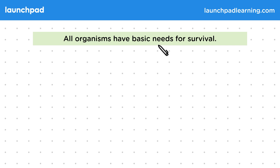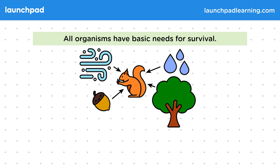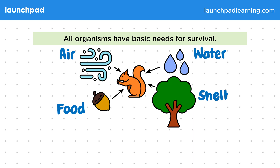All organisms have basic needs for survival. Here are the key factors that organisms rely on for their survival: air, water, food and shelter.